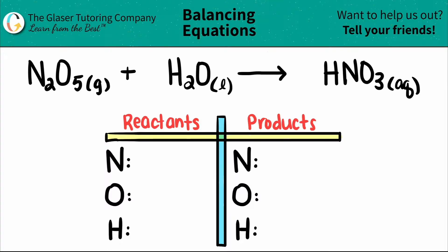Today, we're going to balance the equation N2O5 gas plus H2O, which is water, and this will produce or yield nitric acid, which is HNO3.